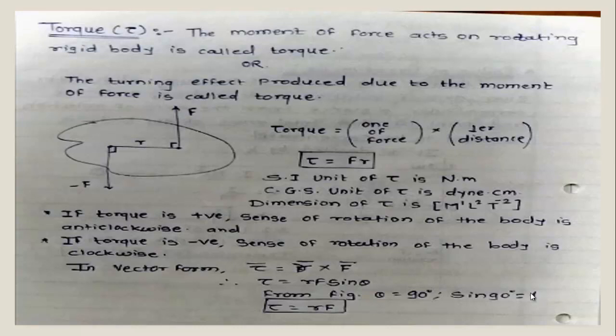What is meant by torque? Torque is nothing but the moment of force acting on a rotating rigid body. Moment of force is also called torque. In physics, it means the tendency of a force to rotate the body about the point by which it is applied. Due to the moment of force, a turning effect is produced in the body — such a phenomenon is called torque. Definition: the moment of force acting on a rotating rigid body is called torque.